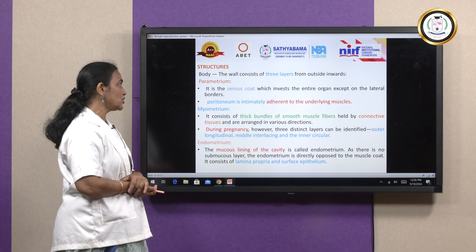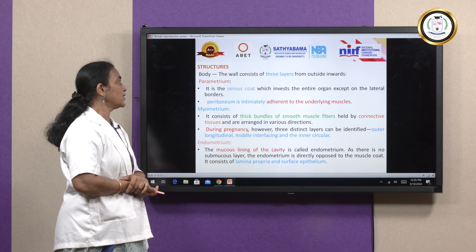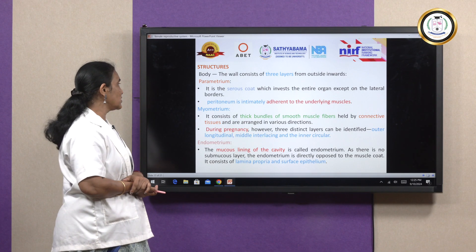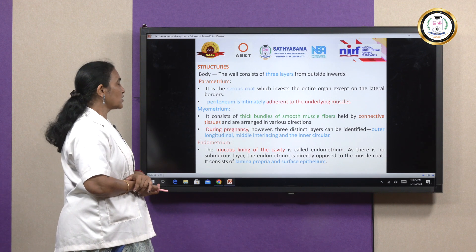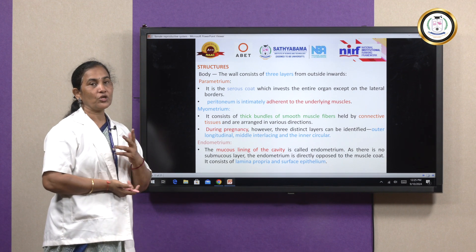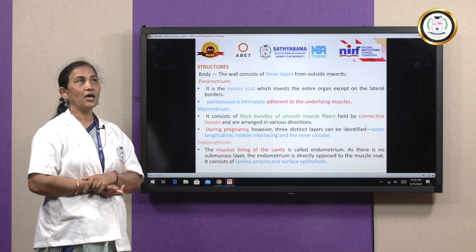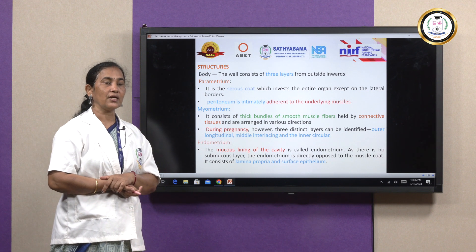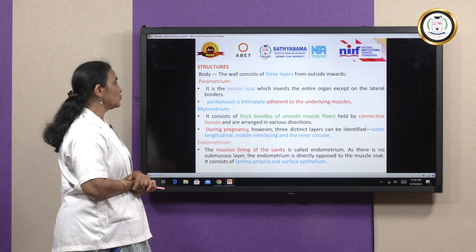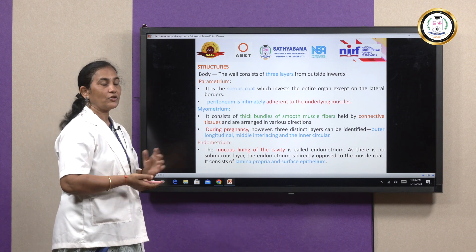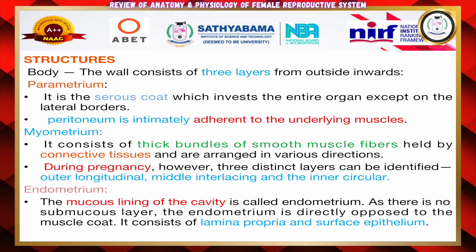The structures of the uterine body are: parametrium — the outermost part, which is a serous coat adherent to the underlying muscles; myometrium — the middle part, consisting of thick smooth muscle and connective tissue; during pregnancy, drugs such as prostaglandins act on the myometrium to help with augmentation of labour. Endometrium is the innermost part — it is the mucous lining of the cavity consisting of the lamina propria and surface epithelium.